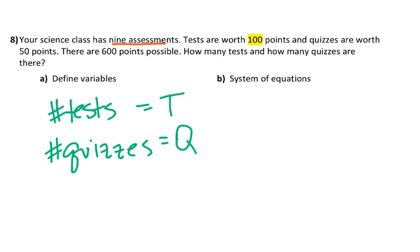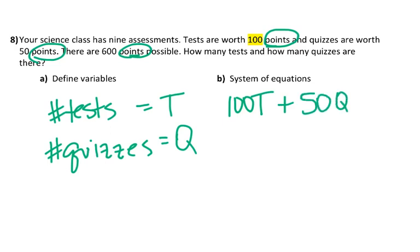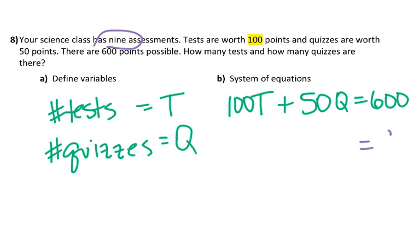So I'll say T equals the number of tests and Q equals the number of quizzes. I need two equations concerning T and Q. One is about points: 100 points per test times T, plus 50 points per quiz times Q, equals 600 total points. The other equation uses the fact that there are nine assessments total. The number of tests plus the number of quizzes equals 9 — that has nothing to do with points. That's the system.